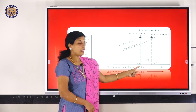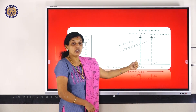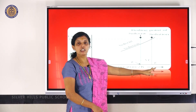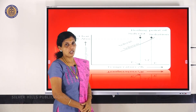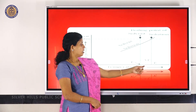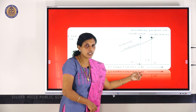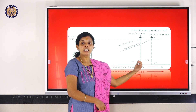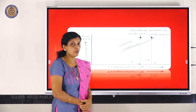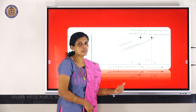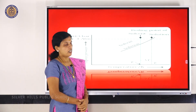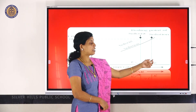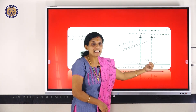The boiling point of pure solvent is called Tb⁰ — where the superscript zero always stands for pure state. This is the temperature that is the boiling point of the solution. From the graph, we can see that the boiling point of solution is greater than the boiling point of pure solvent, i.e., Tb is greater than Tb⁰. Tb stands for boiling point of solution, Tb⁰ stands for boiling point of pure solvent. The difference between Tb and Tb⁰ is called delta Tb.